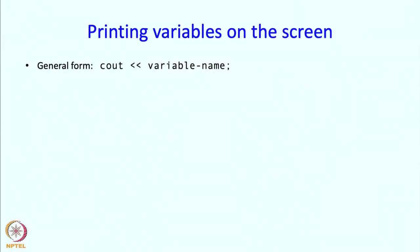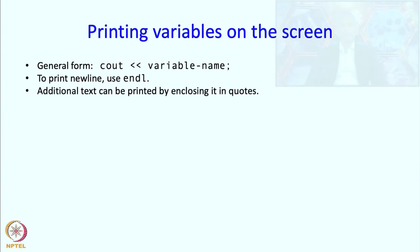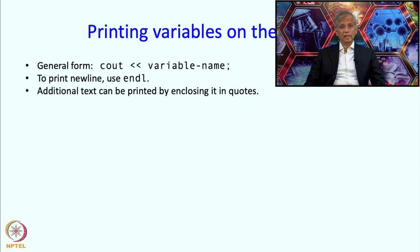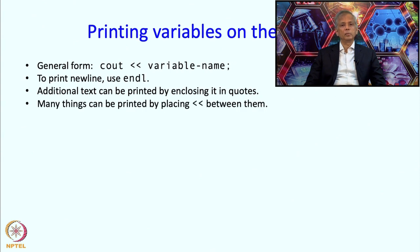Printing variables on the screen is reasonably simple — we have seen an example in chapter 1. The general form is 'cout <<' followed by the variable name or a message. For a new line, use the reserved keyword 'endl'. To print a message, enclose the text in quotes. To print several things, chain them with '<<' between each item. The '<<' and '>>' are actually operators — you may hear them referred to as the insertion and extraction operators.